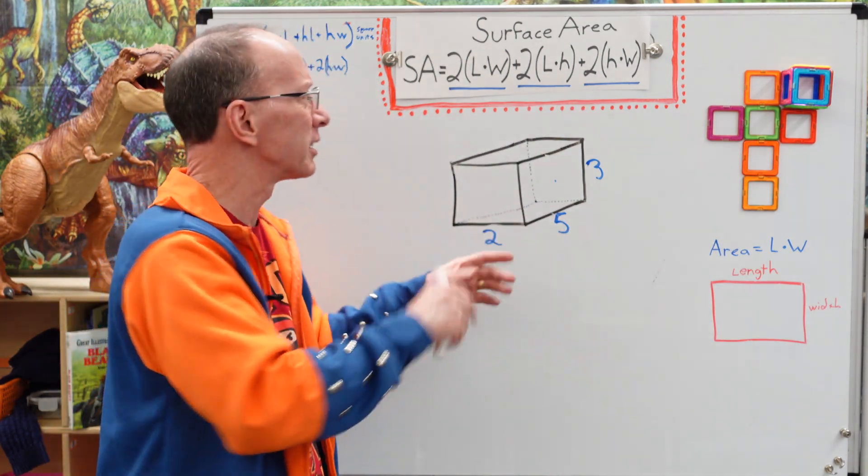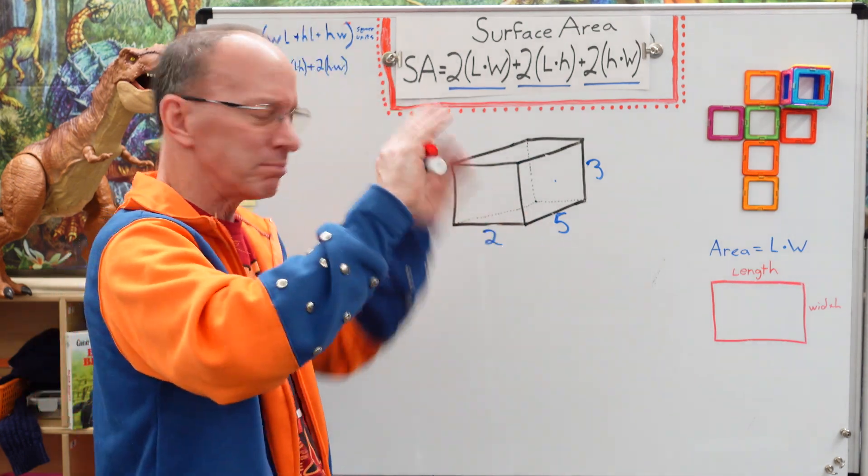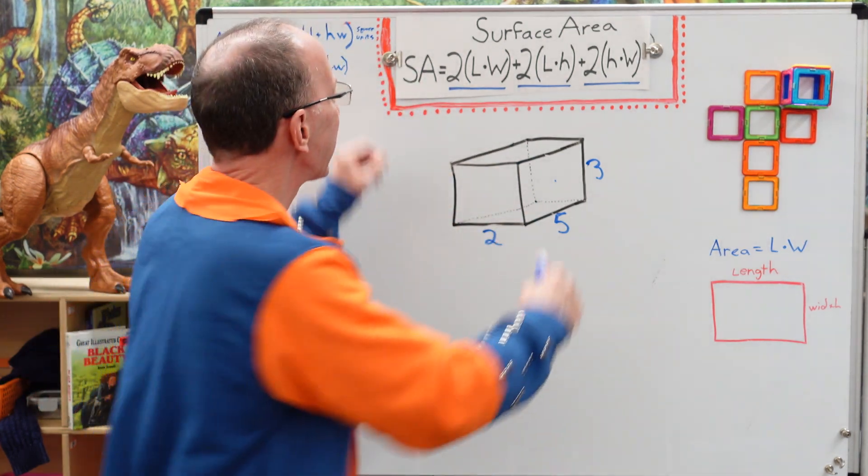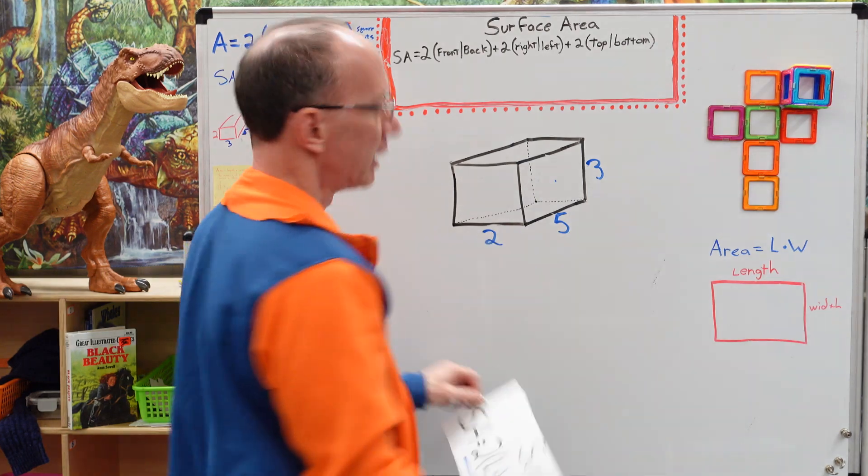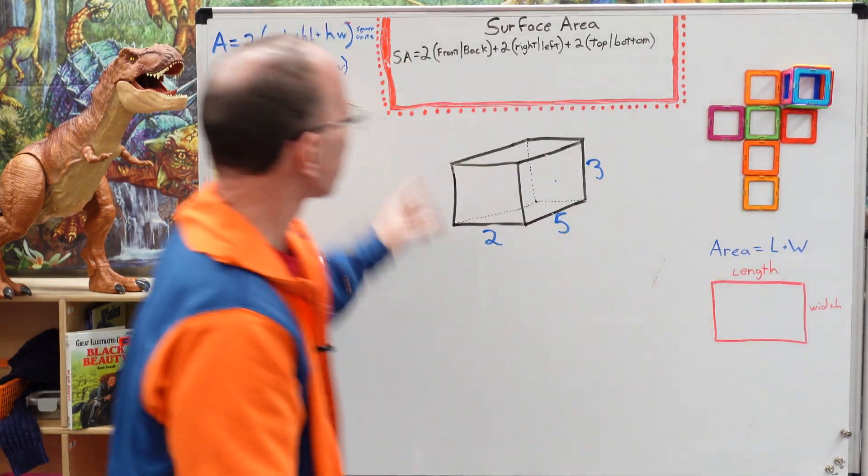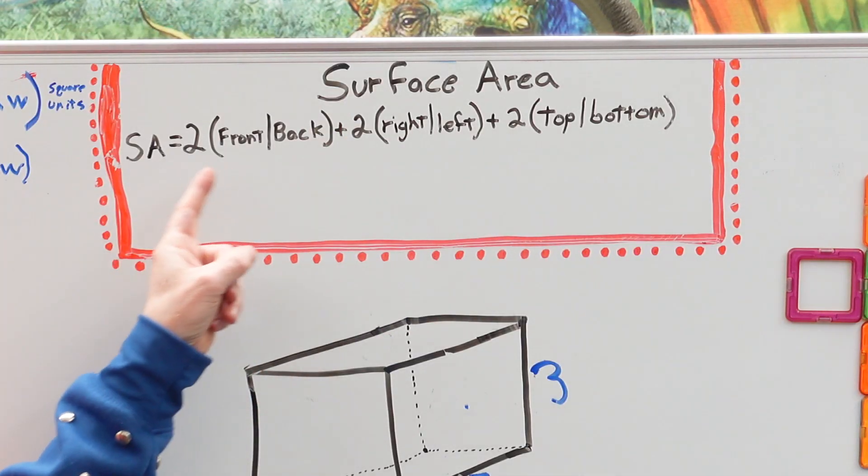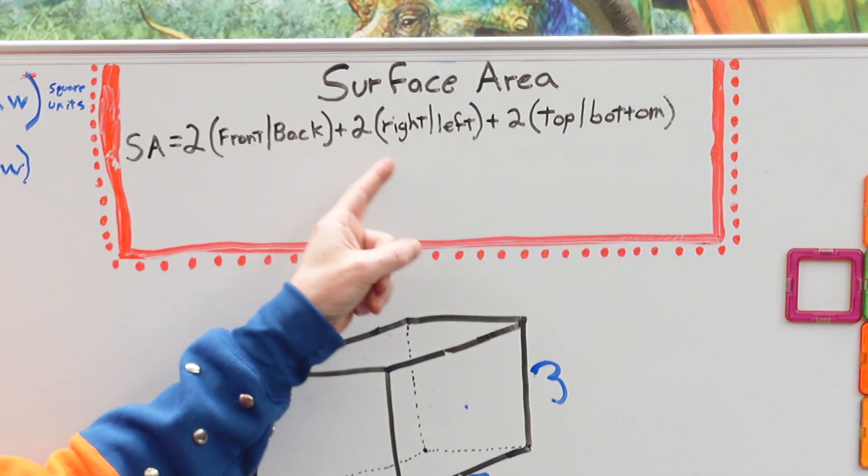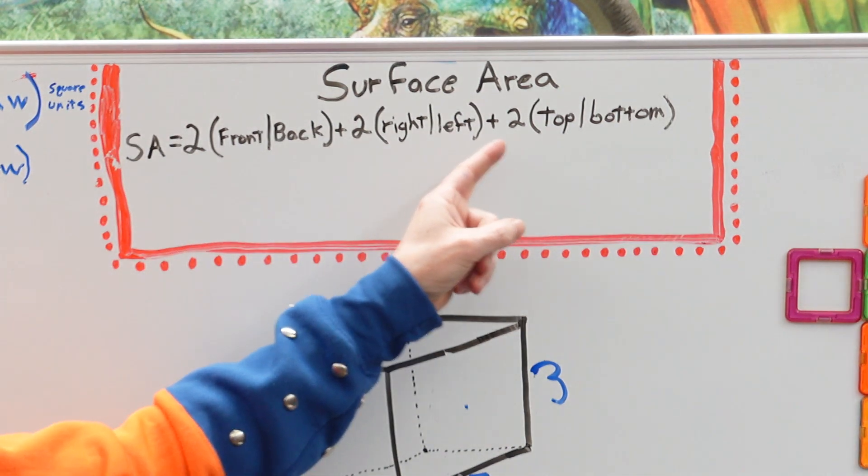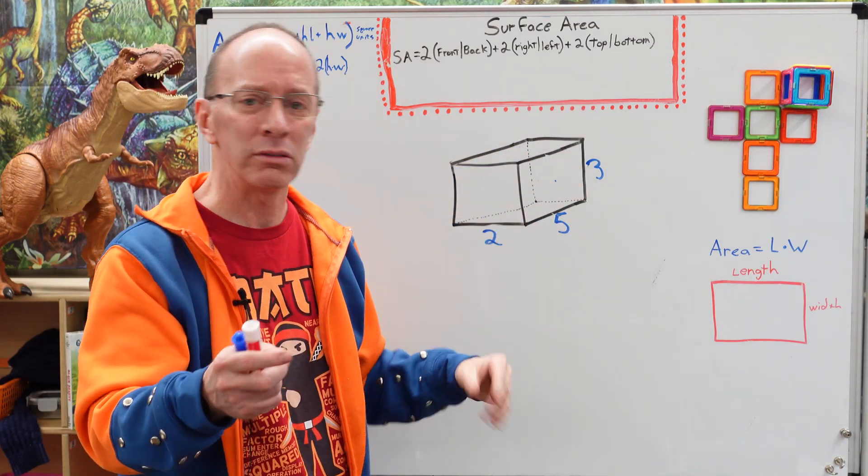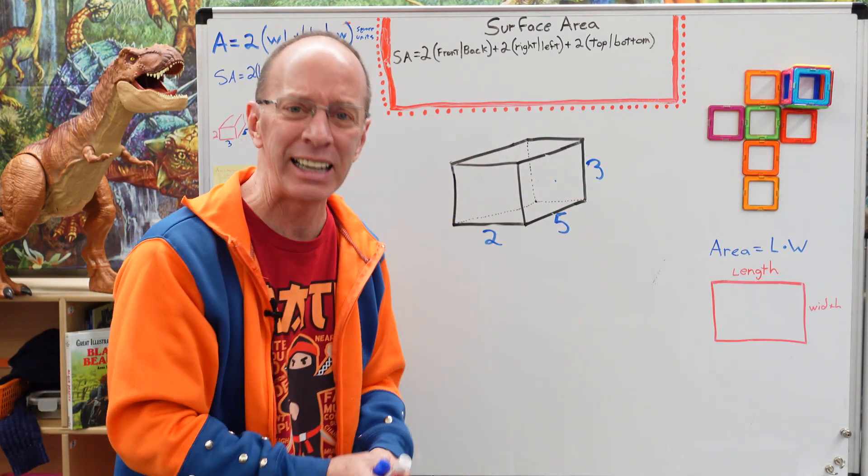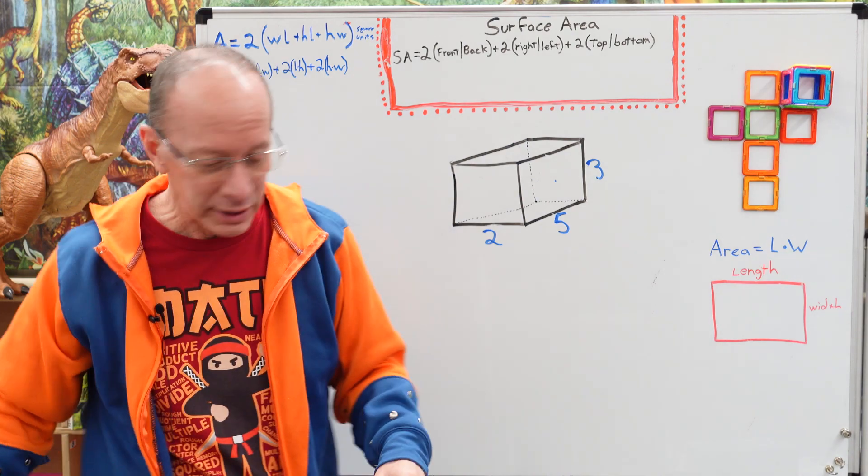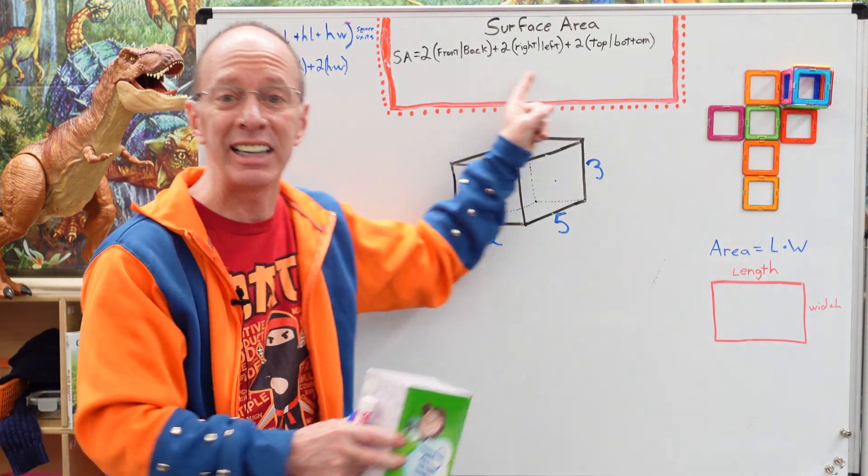And it's a little difficult because what is height and width? Don't worry about it. I got an easier one for you right here. Surface area equals two times front or back plus two times right or left plus two times top or bottom. Well, you're saying, hey, I thought you're going to make it easier for me. Don't worry. Take a look at this. I even got an easier one for you.